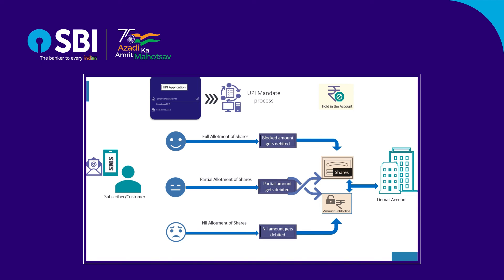If the information furnished by the applicant is incorrect or insufficient, the bid is liable to be rejected and the company or bank would not be liable for any losses. Verify your bank account for blocking and unblocking of funds, and check your DMAT account in case the shares are allotted to you. For any updates or clarification, contact your bank. Thank you and happy investing.